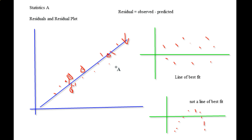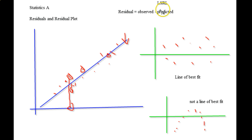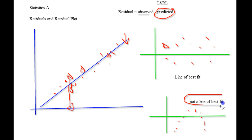First, you need your LSRL for your prediction. Then you need to take each residual data point and plug in the actual point. You need to go straight down to the x, find that x, plug it into the LSRL, get that number, and then subtract that from the actual observed point. Once you do that, you should get these points, and you should be able to find out if it's a line of best fit or not a line of best fit.